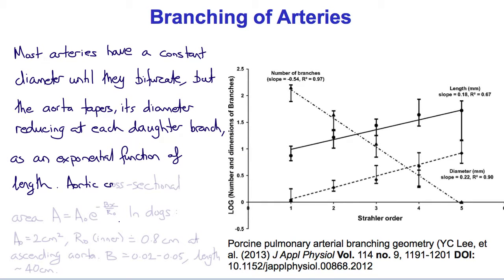In this empirical relation, the aortic cross-sectional area A is equal to A0 e to the minus Bx over R0, where A0 is the cross-sectional area of the ascending aorta at the top. R0 is the inner diameter of the ascending aorta at the top. X is the distance along the aorta, which is about 40 cm in dogs. So A0 is about 2 cm squared in a dog, R0 inner is 0.8 cm, and B is approximately 0.02 to 0.05.